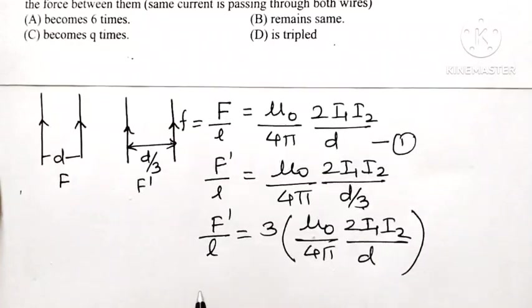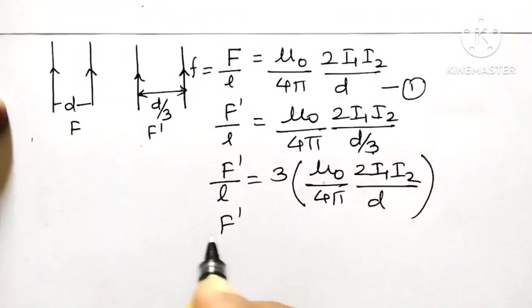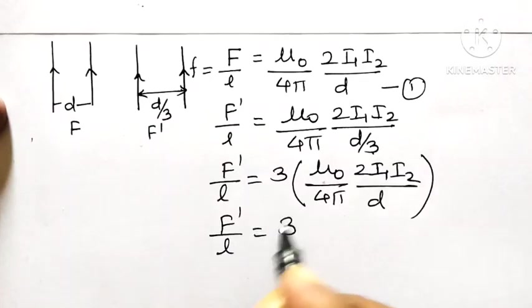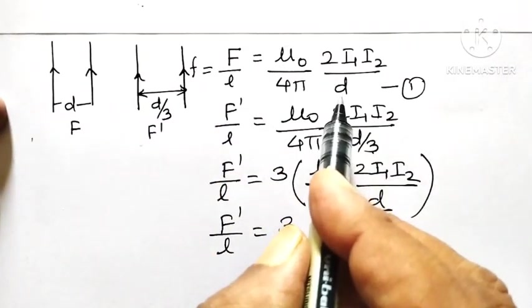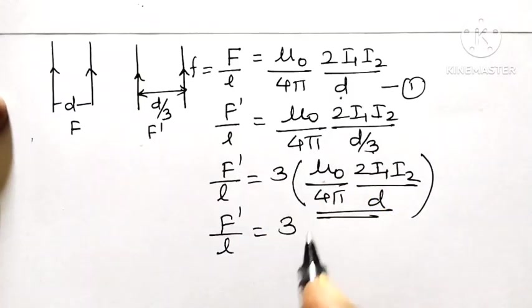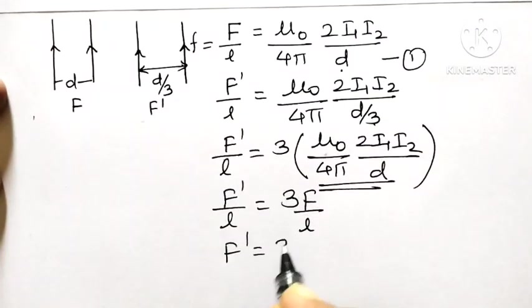So this is the force per unit length, so this is f dash by l is equal to 3 times, this is f by l when distance of separation between two conductors is d. So this is 3 times f by l or f dash is equal to 3 times f.